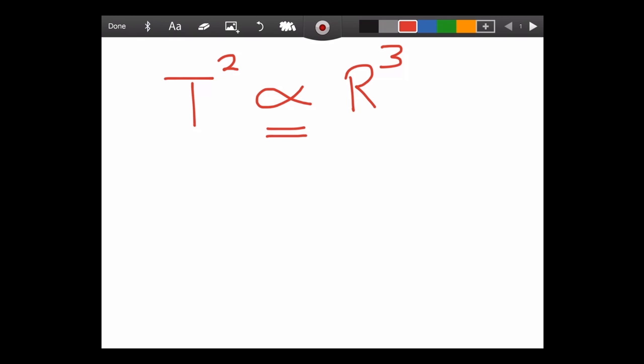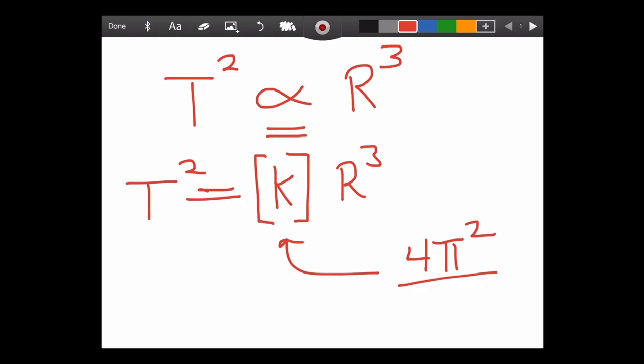Now, what does this proportionate mean? It means that time, if you want to get the exact time, equals some constant times radius cubed. Now, that constant is actually 4π² divided by the gravitational constant times the mass of the object that it is orbiting.